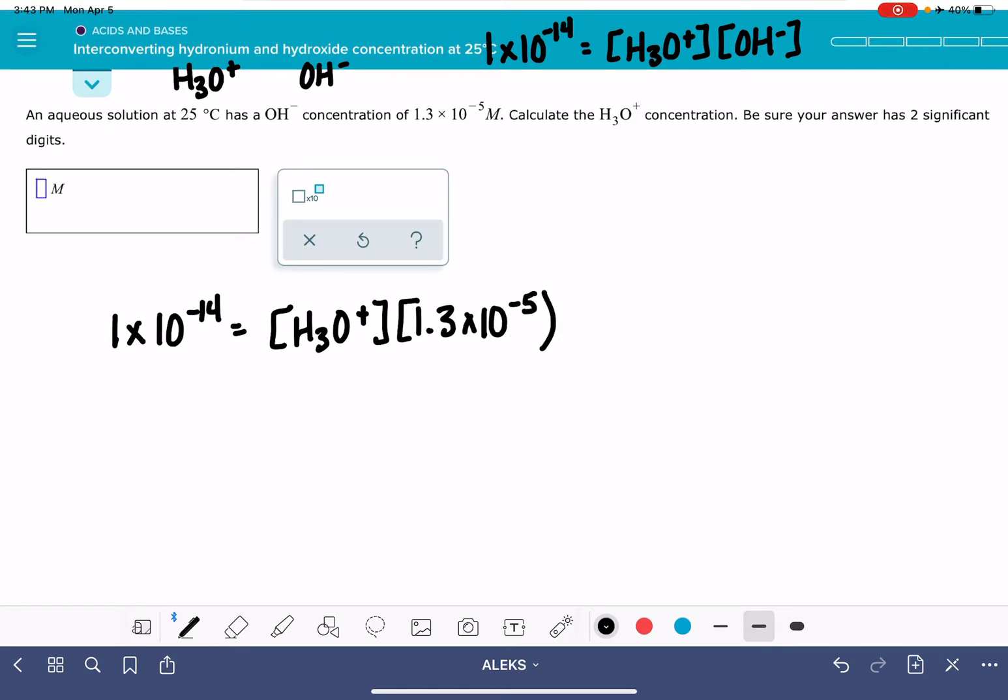And so we're just going to divide both sides by 1.3 times 10 to the minus 5, and solve for H3O plus.